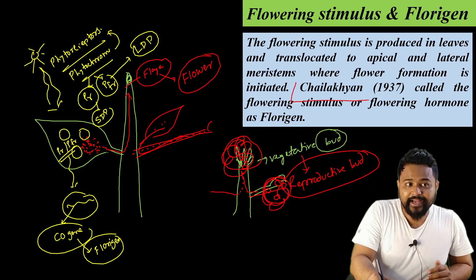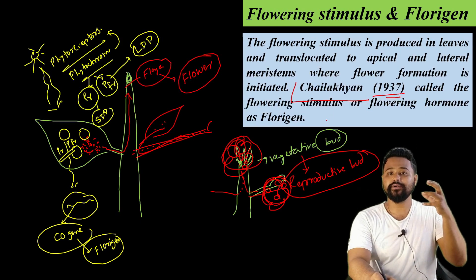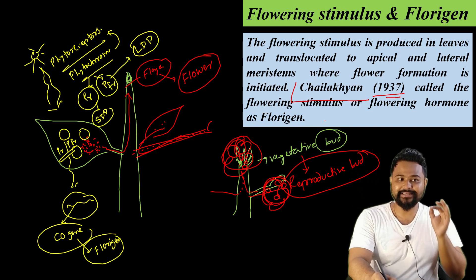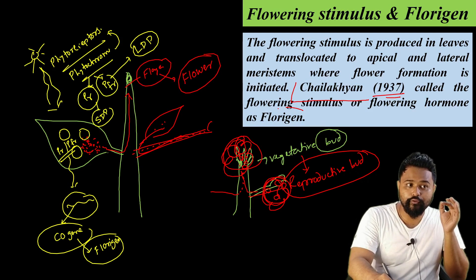Who discovered this for the first time? Chailakhyan in 1937. This flowering stimulus was discovered as a hypothetical idea, and it was called florigen.